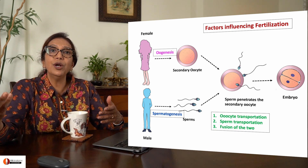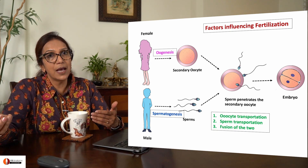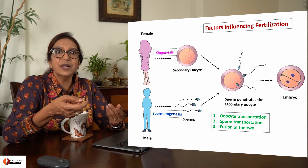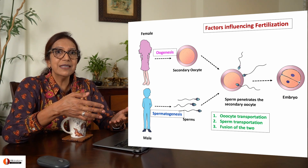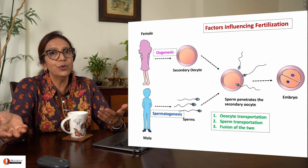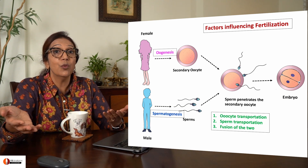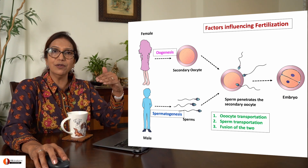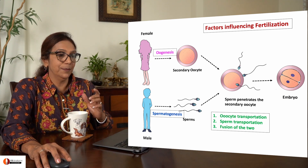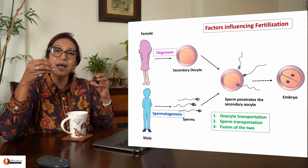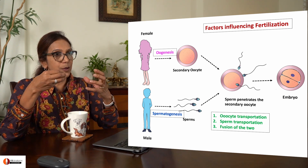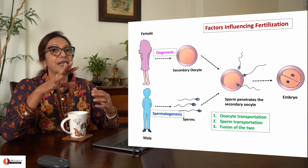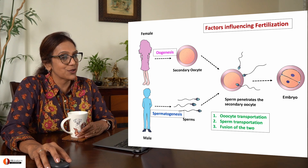Suppose the sperms are not allowed to reach the ampullar fallopian tube — for example, something as simple as using a condom. In this case, the sperms are not being allowed to reach the ampullar fallopian tube. What is affected? Fertilization is affected. So each of these processes matter. The sperms may be right next to the oocyte, but only on fusion will there be fertilization.